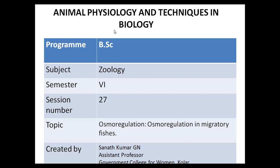Our previous concentration was towards freshwater and marine animals and how they spend their life throughout in their specific habitat. The topic we are choosing now is more interesting because we are choosing two important migratory fishes: number one, the eel, and number two, the salmon fish. The interesting fact about these migratory fish is they switch between two osmoregulatory mechanisms.